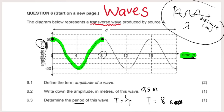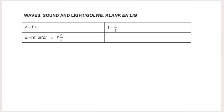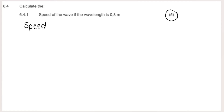They want the speed of the wave — this is a five-mark question, so we'll likely use more than one formula. Write down your variables: we want speed (v). From the question, wavelength λ = 0.8 m, and we just found the period T = 8 s. The formula for speed is v = fλ, but we don't know frequency yet, so the first step is to find f.